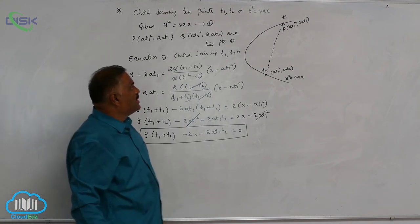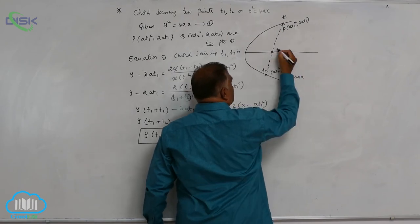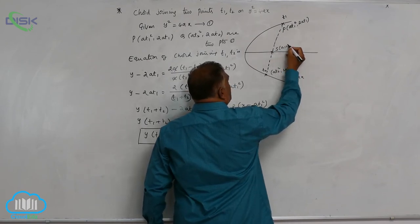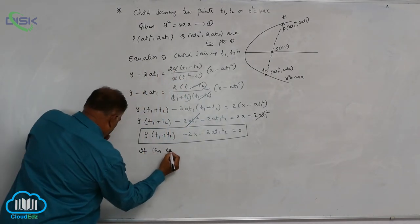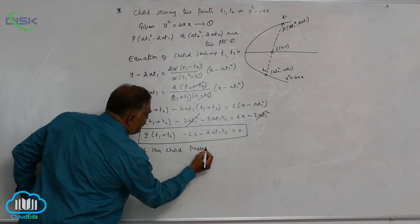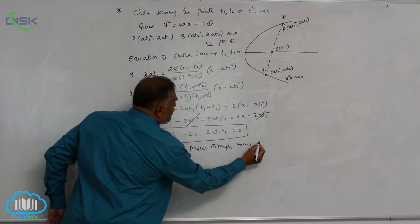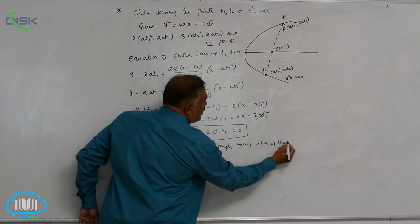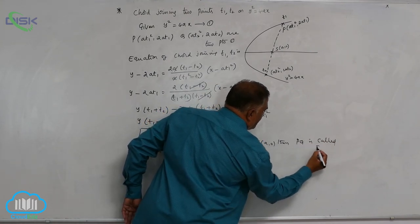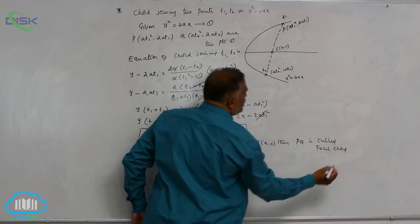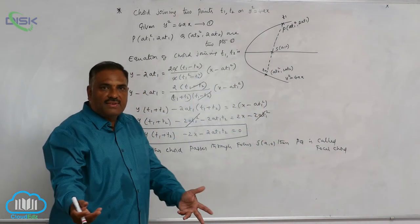If this chord passes through the focus S(a, 0) — which lies on the principal axis — then the chord PQ is called a focal chord. As discussed earlier, any chord passing through the focus is always called a focal chord.